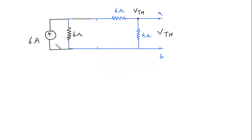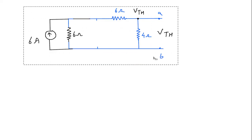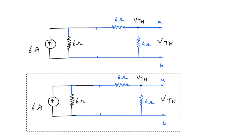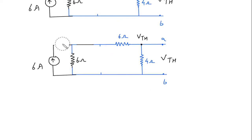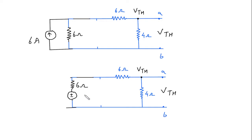Now again we will convert this current source into its equivalent voltage source. The resistor is 6 ohm, and the voltage source will be current into resistance: 6 ampere into 6 ohm equals 36 volt.